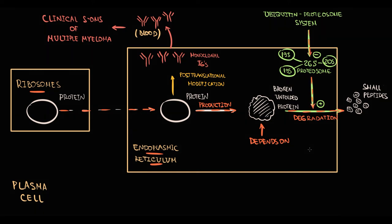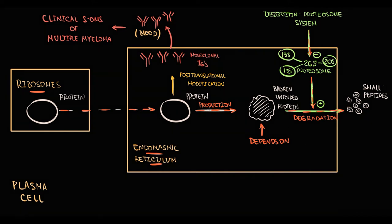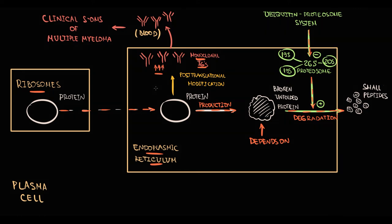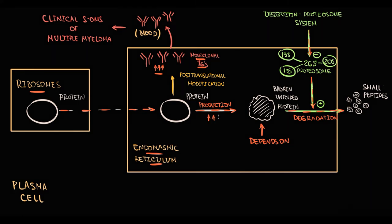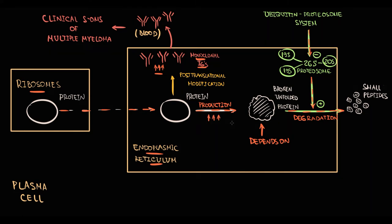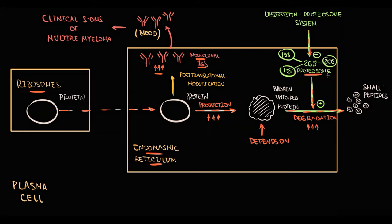As we know, in multiple myeloma, malignant plasma cells produce huge amount of clonal immunoglobulins. To maintain normal protein levels inside the endoplasmic reticulum, massive protein production by ribosomes and endoplasmic reticulum has to be accompanied by rapid utilization of unfolded proteins by proteosomes.